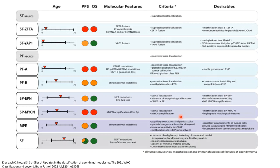Myxopapillary ependymoma shows characteristic papillary architecture and perivascular myxoid change or at least focal myxoid change, with immunoreactivity for GFAP. The methylation class of myxopapillary ependymoma has not been well defined. Subependymoma is a circumscribed glioma with clustering of tumor cell nuclei in an expansive and focally microcystic or fibrillary matrix.